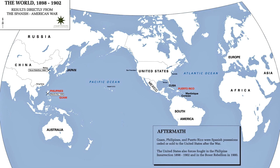Theodore Roosevelt didn't like being assistant to anything — he wanted to run the show. He encouraged the Secretary of the Navy to take long vacations and essentially took over. Before the war actually started, Roosevelt went to McKinley and asked: if war breaks out between Spain and the United States, may I have permission to direct our Pacific fleet to the Philippines? McKinley didn't think much of this at the time — he was still trying to avoid war — but he gave Roosevelt the green light. Roosevelt then began sending messages to Hong Kong, where the United States Navy had six ships stationed.